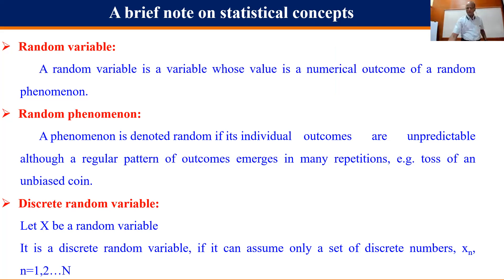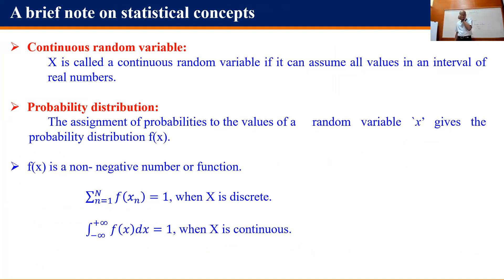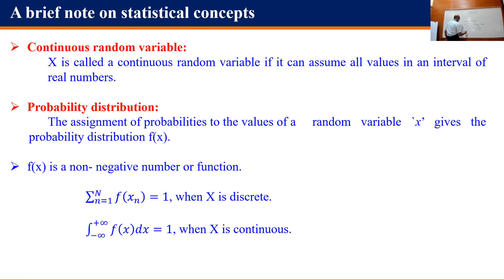A random phenomenon is one in which individual outcomes are random, although when you repeat it, a regular pattern of outcomes emerges. The probability distribution is the assignment of probabilities to the values of a random variable: sigma f(xn) = 1 for n = 1 to N. The probability of getting heads is 0.5 and of tails is 0.5, so sigma of probabilities equals 1.